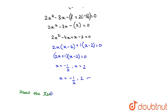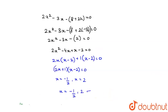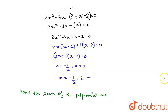So all four zeros of the polynomial are: x = -1, 3, -1/2, and 2. This is the final answer. I hope you understood the explanation. Thank you.